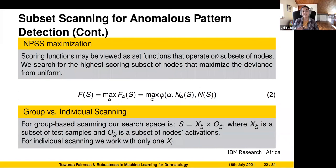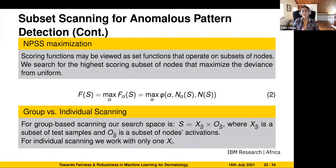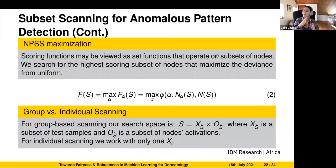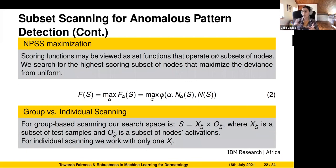We search for the highest-scoring subset of nodes that maximizes deviation from uniform — the most anomalous subset of nodes that trigger an image. In individual scanning, we look for a group of nodes in a layer that makes a single sample anomalous. We also have group scanning, where we search across a group of images to find which nodes activate together — identifying multiple anomalous images and multiple anomalous nodes simultaneously.